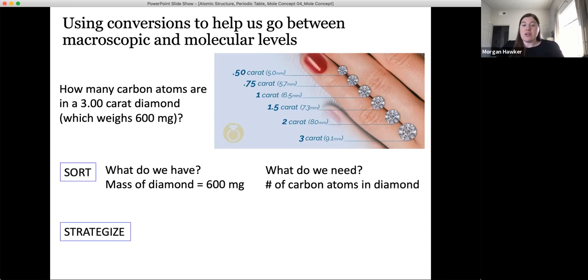First, we want to sort out what we have, which is the mass of our diamond in milligrams and what we need, which is the number of carbon atoms. Our strategy is always start with the given. So we're starting with our number in milligrams. Then we need to ultimately end up with atoms. So we can use the framework that we introduced on the previous slide, but that involves first converting the mass from milligrams to grams. We'll do that using the conversion factor from metric prefixes that we discussed in a previous module.